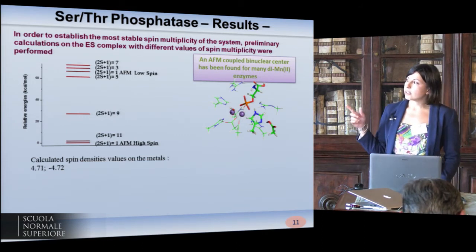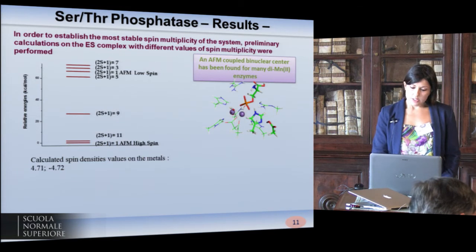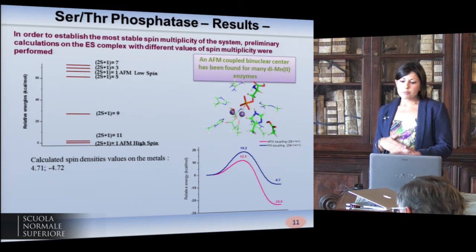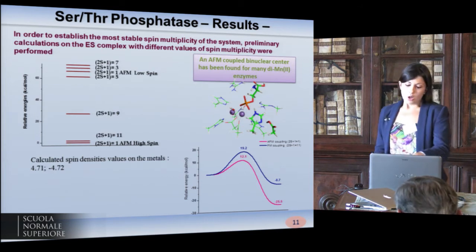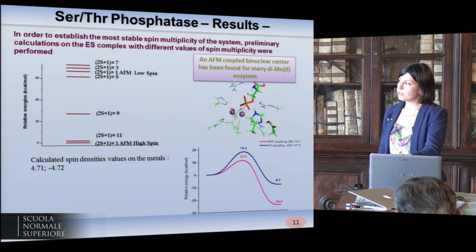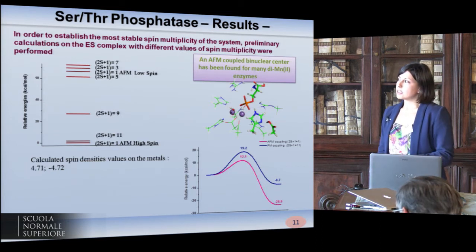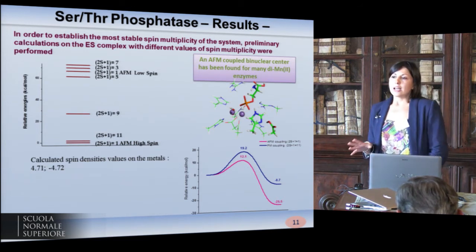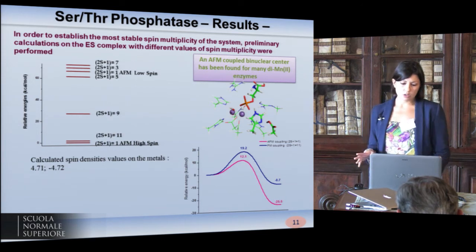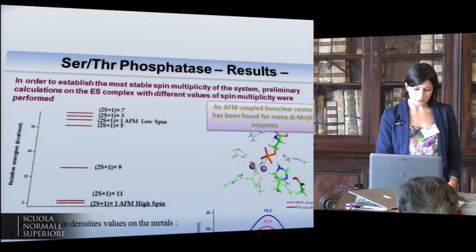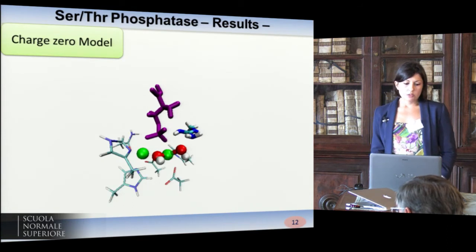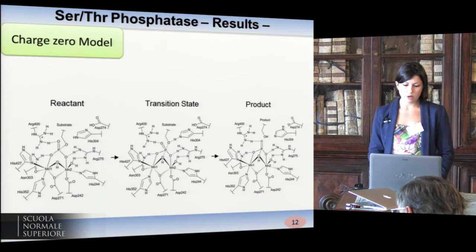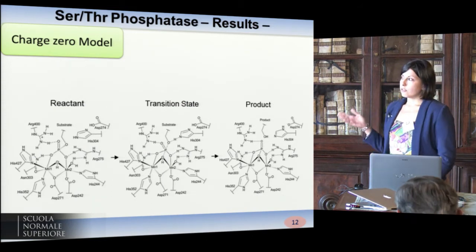We found that spin multiplicity one, arising from a high-spin configuration of both manganese antiferromagnetically coupled, is the most stable. Even if the difference between spin multiplicity one and eleven is very small for the enzyme-substrate complex, when we reproduce the energetics of the process, the difference is very large between considering the antiferromagnetic coupling or not. This kind of exploration is usually disregarded in theoretical calculations of enzymatic reactions.